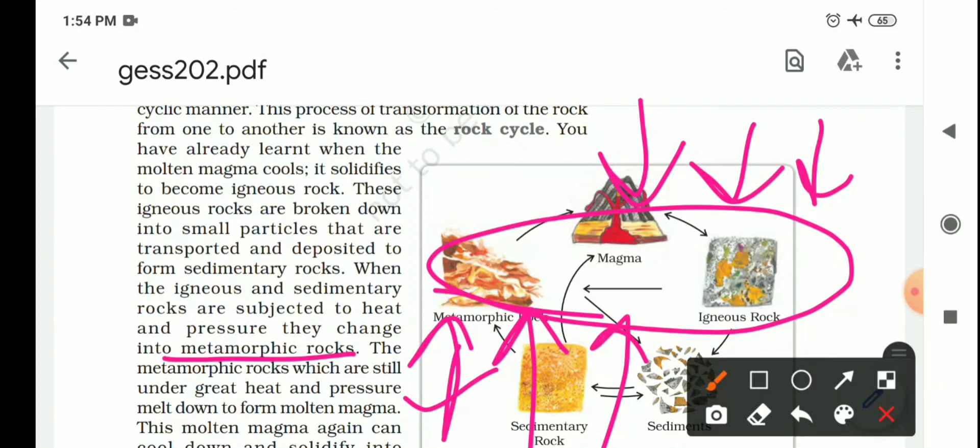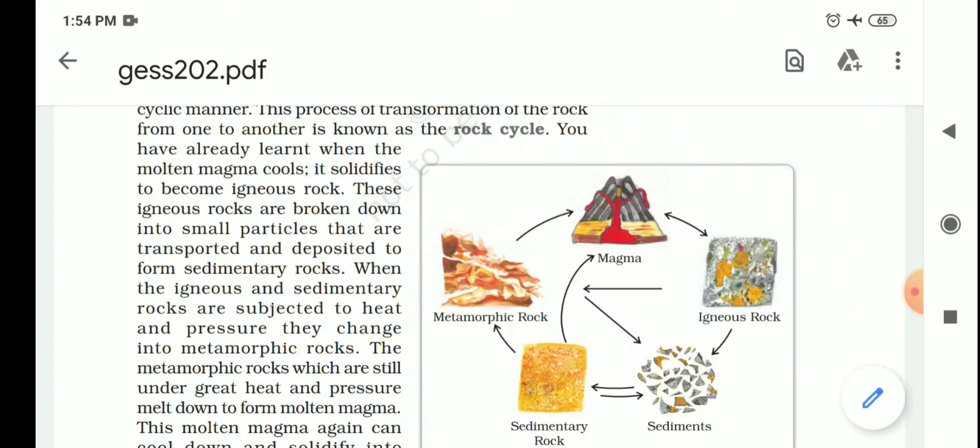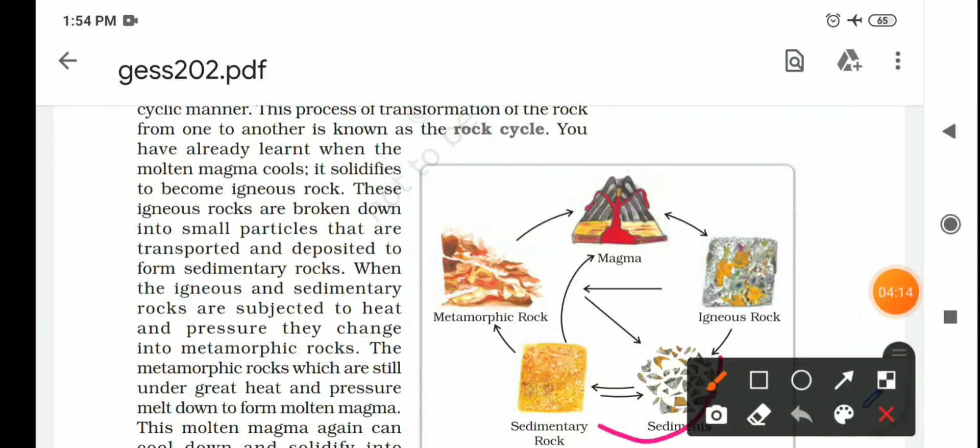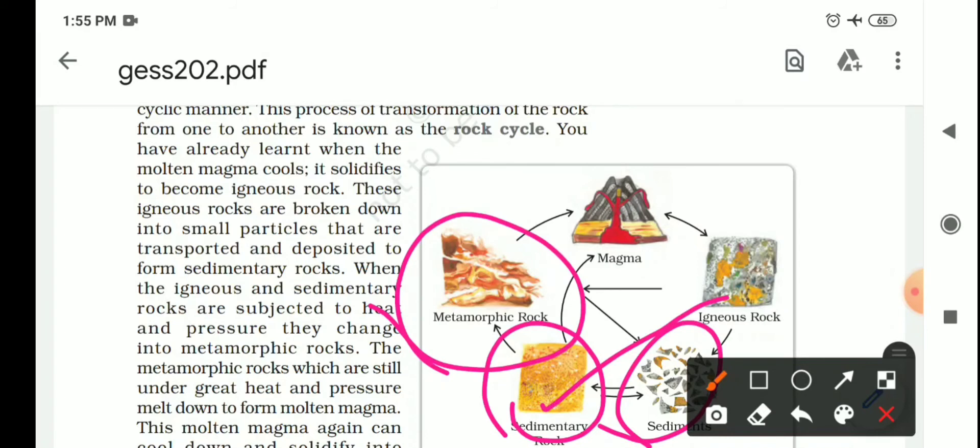These are metamorphic rocks, but if we put a lot of pressure and heat, then what will happen? The metamorphic rocks will melt and will be converted into molten magma. What will happen with molten magma? Now molten magma will be solidified and cool. What will become igneous rocks. And igneous rocks will break and become sedimentary rocks. And igneous and sedimentary rocks, if we put heat and pressure, it will become metamorphic rocks. And if we put more pressure on the metamorphic rocks, then what will happen? Molten magma.